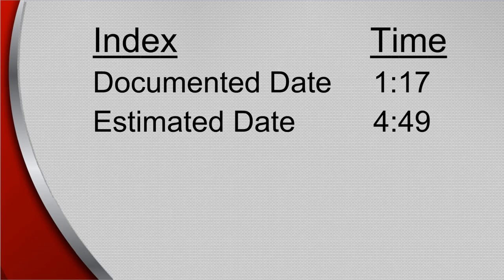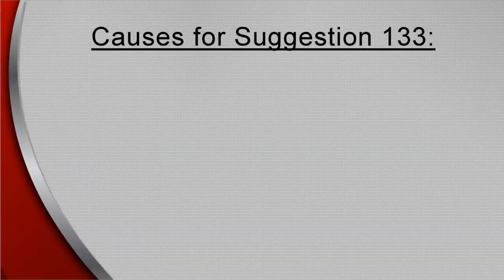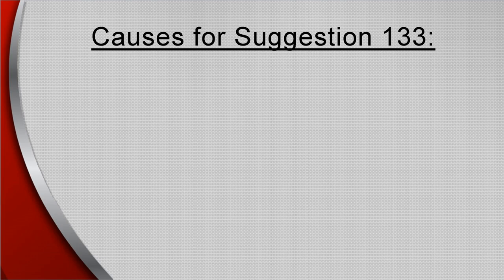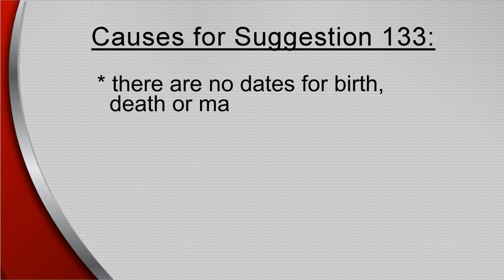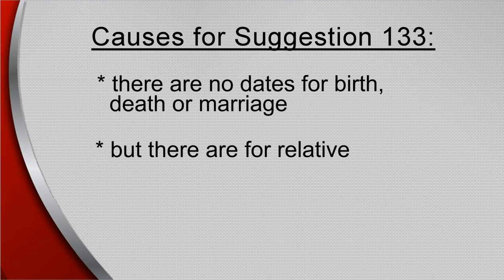There are two examples in this video. The first shows a profile where documentation is found. The second shows how to estimate the birth year. Suggestion 133 is caused when there are no dates for birth, death, or marriage, but there are for their relatives.